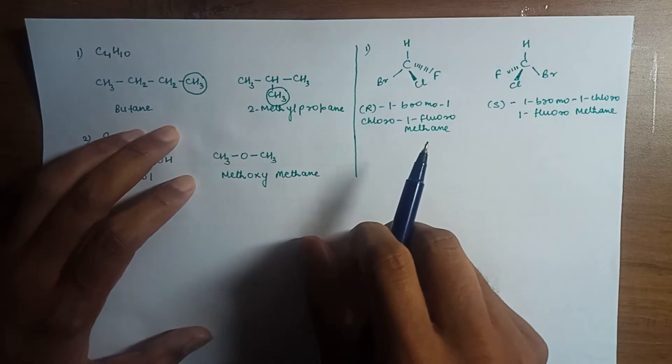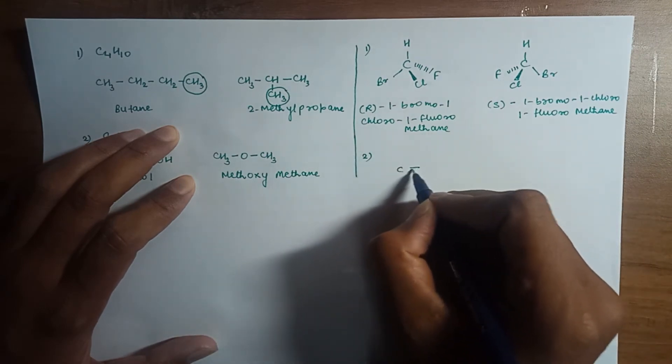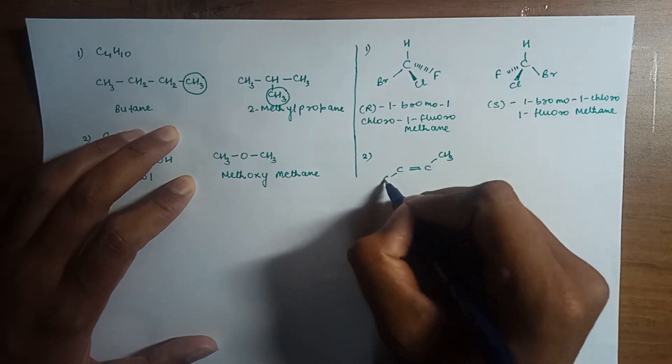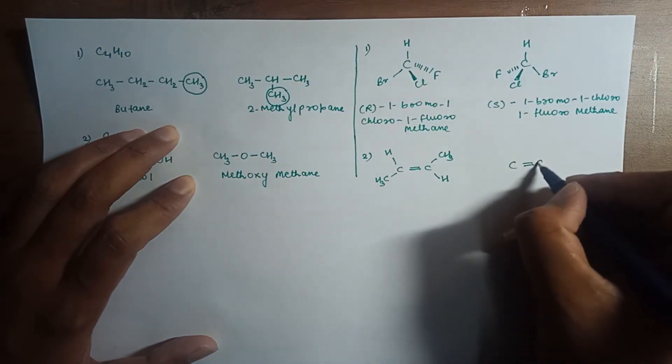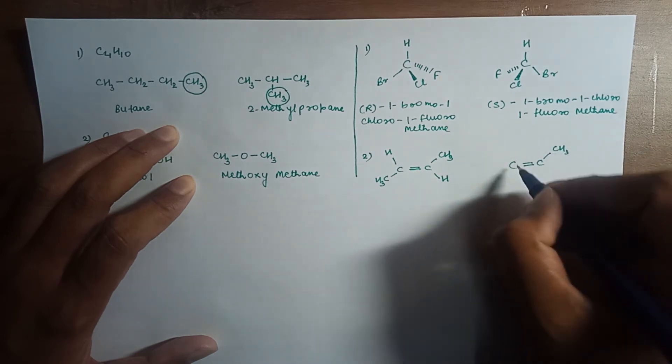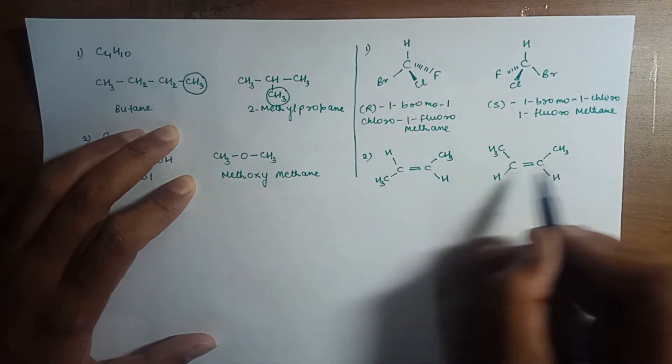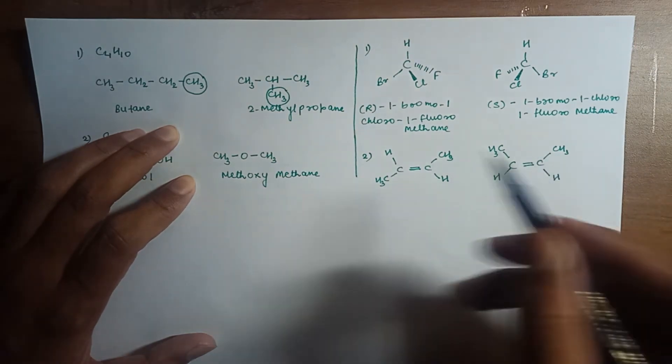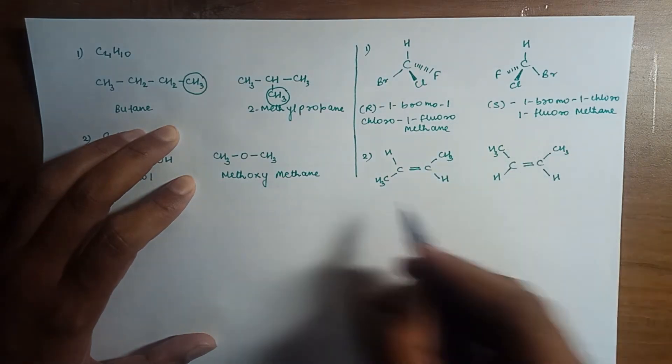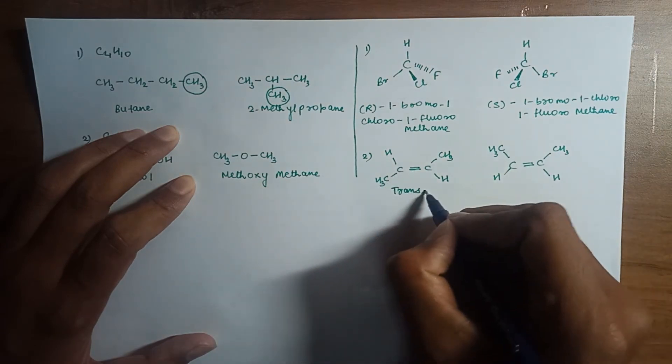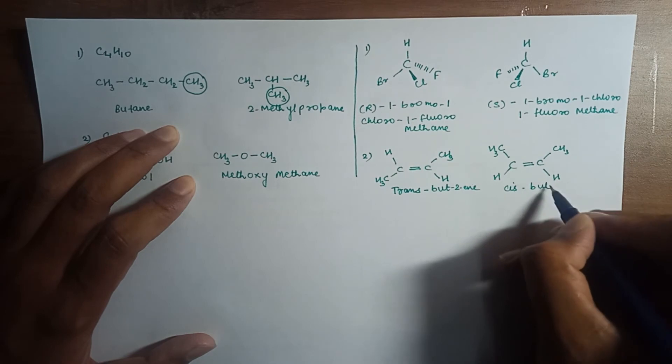Here what is R, what is S we will see in other videos and I will explain this term also. The second example is 2-butene. Two structures are possible. Here you can see that the connectivity in both the compounds is same, but the arrangement is different. Here two CH3 groups are in opposite direction, whereas in this case two CH3 groups are in the same direction. Here it is my trans-butene and this is my cis-butene.